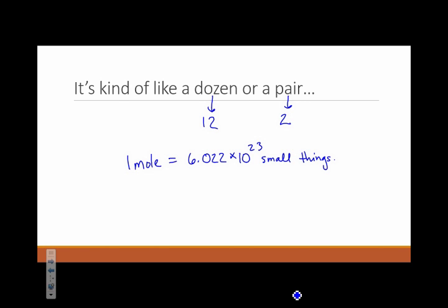And it's 6.022 times 10 to the 23rd. This number is known as Avogadro's number. And this is the definition.